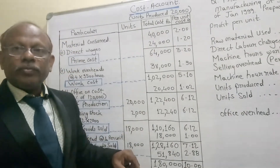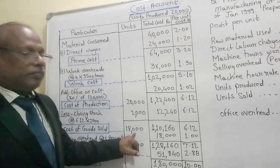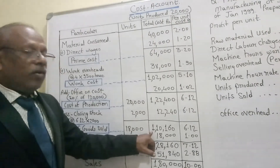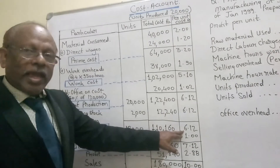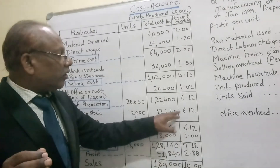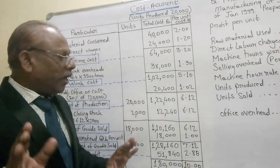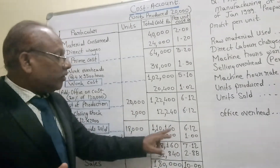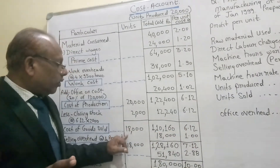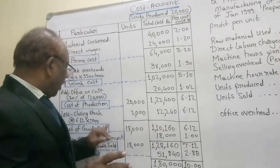After deducting closing stock from cost of production we get cost of goods sold. Cost of goods sold is for 18,000 units and amounts to 1,10,160 rupees. The same rate of 6 rupees 12 paise applies because each article was produced at that rate, and 18,000 units multiplied by 6.12 gives 1,10,160.